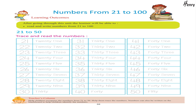21 to 50 — Trace and read the numbers: 21, 22, 23, 24, 25, 26, 27, 28, 29, 30, 31, 32, 33, 34, 35, 36, 37, 38, 39, 40, 41, 42, 43, 44, 45, 46, 47, 48, 49, 50.